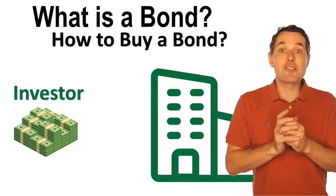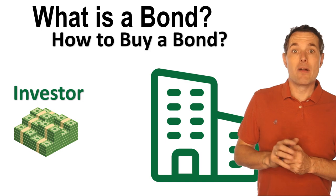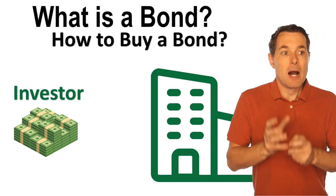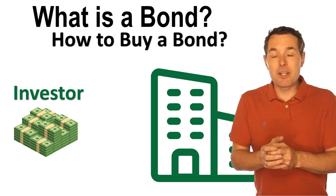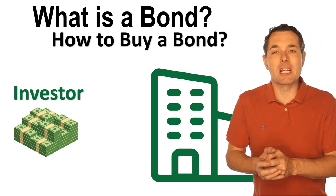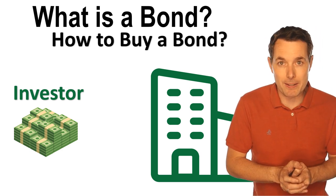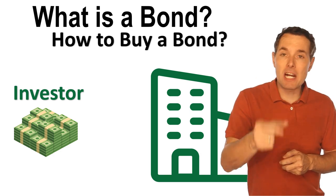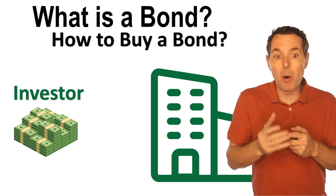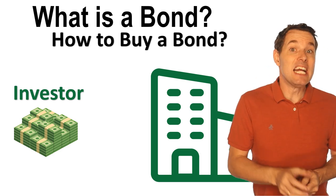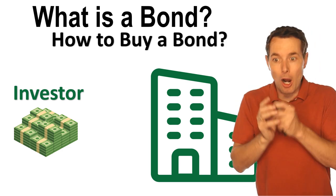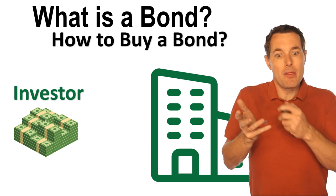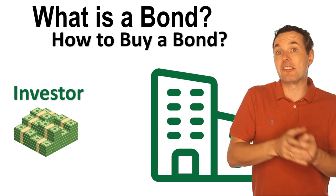So at its very core, let's imagine that we're an investor and then we have a company. A bond, unlike a stock, is simply a loan to that company. When we buy a stock, we're actually buying a piece of the company — we own a piece of it. If we buy a bond, we are essentially lending to that company and they owe us the money back.